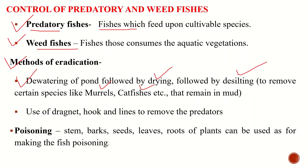Sometimes we can use the second method: removal of eggs and fishes from the fish pond using nets. This method is a primitive one and not a very sure method. However, repeated netting in small water tanks with the help of a dragnet ensures successful removal of predatory fish. We can also use hooks and long lines to catch mostly predatory fishes like Wallago attu and murrels.